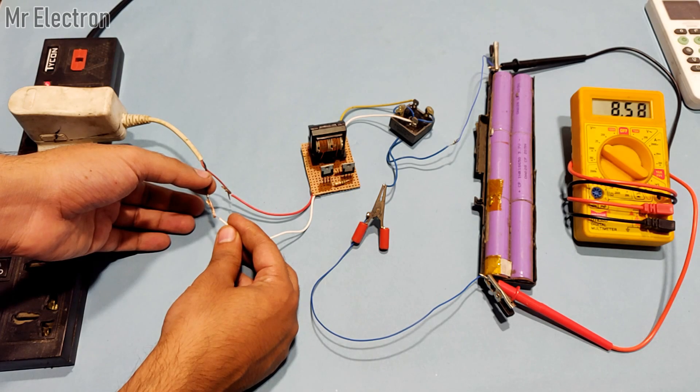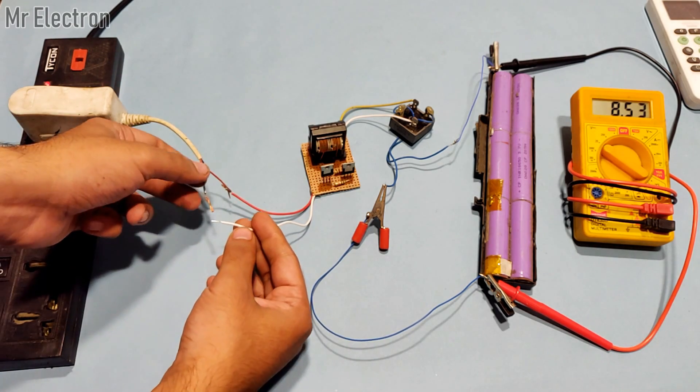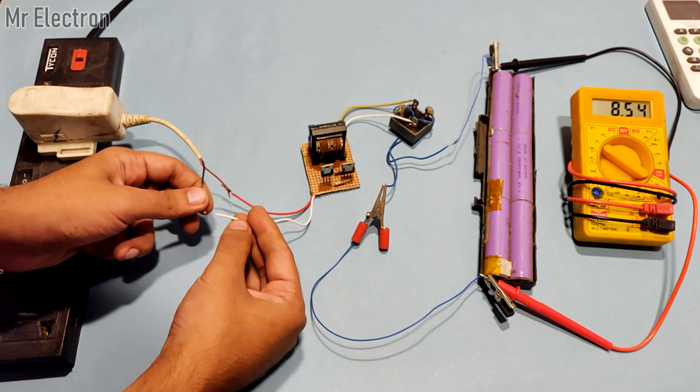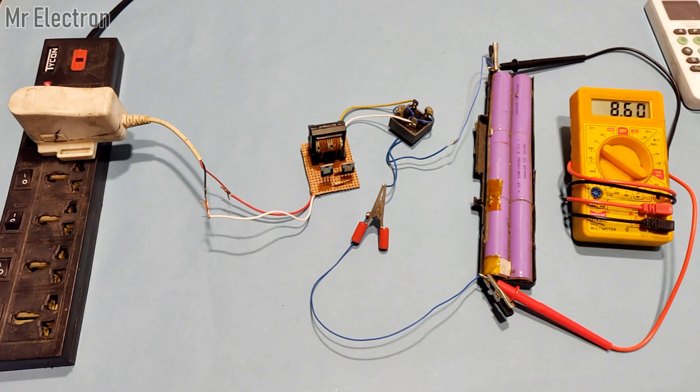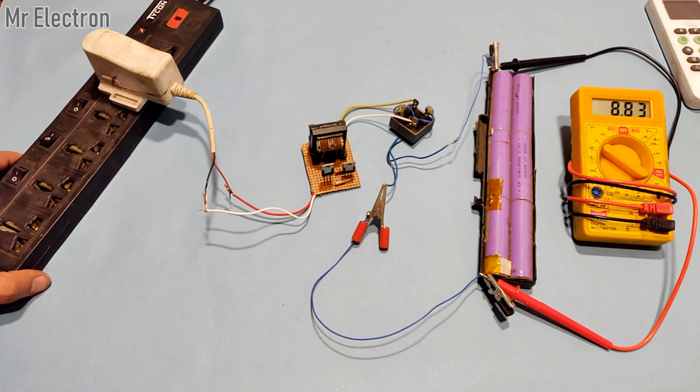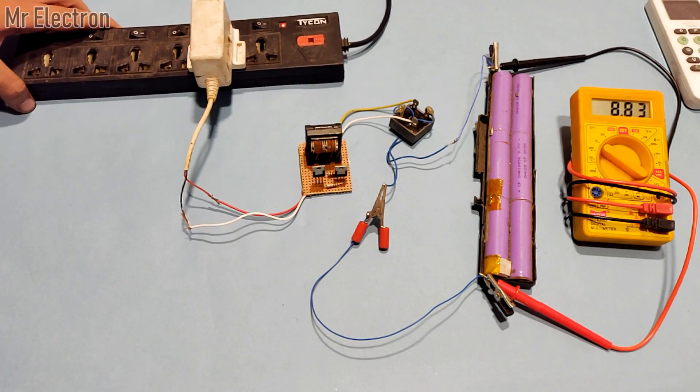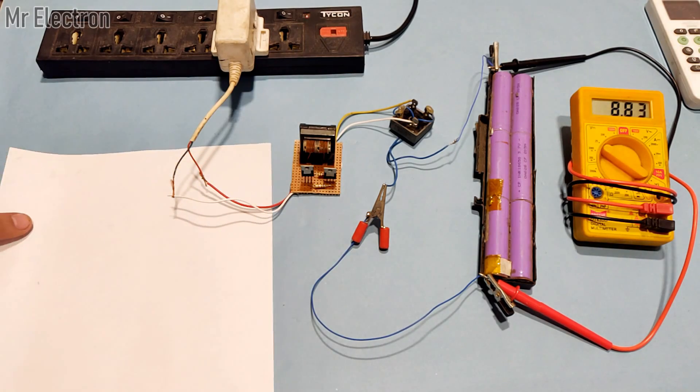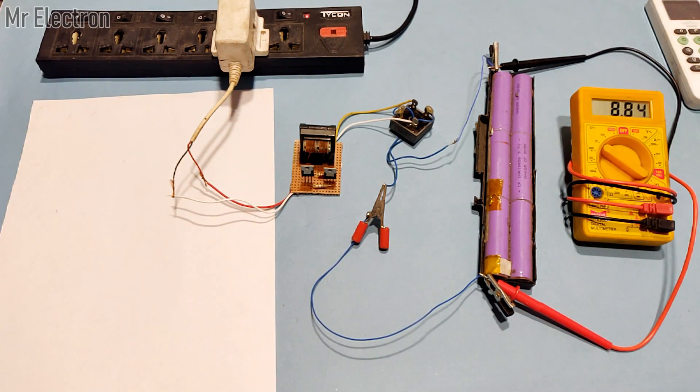As you can see, as soon as I connect the negative terminal of the step-up converter to the negative terminal of the mobile charger, the voltage across the battery starts increasing as indicated by the multimeter: 8.68, 8.69, and so on. If I keep it connected for long, the mobile charger is going to completely charge the battery in some time.